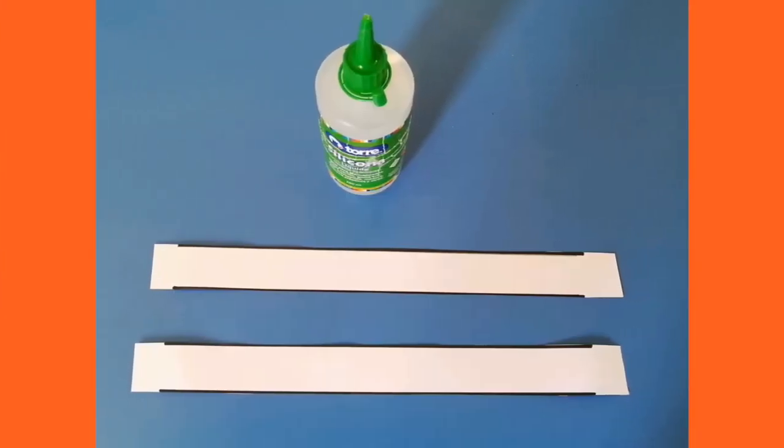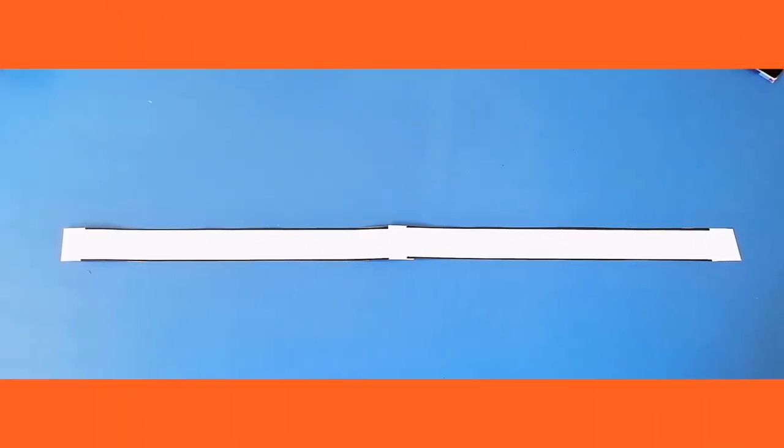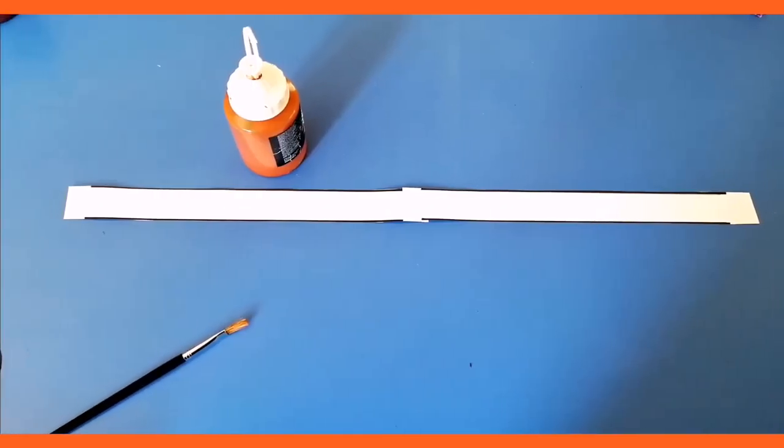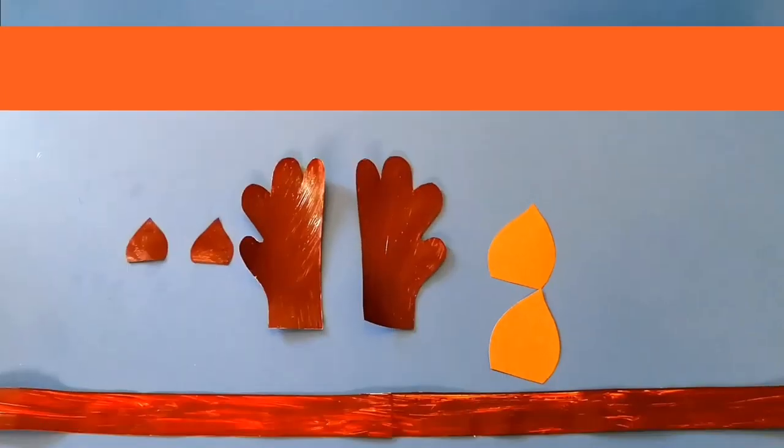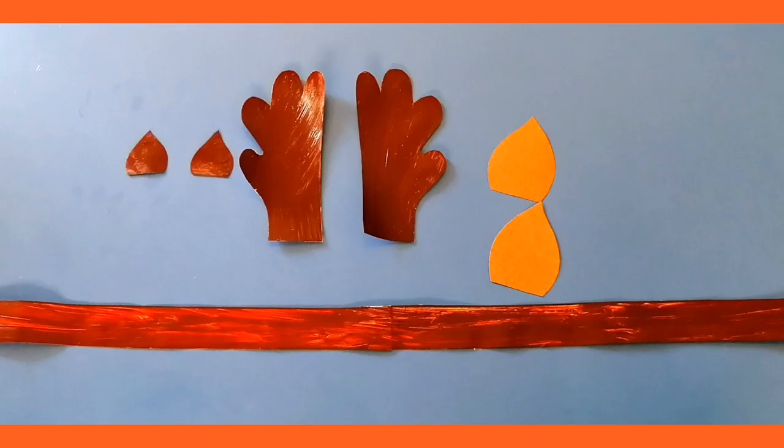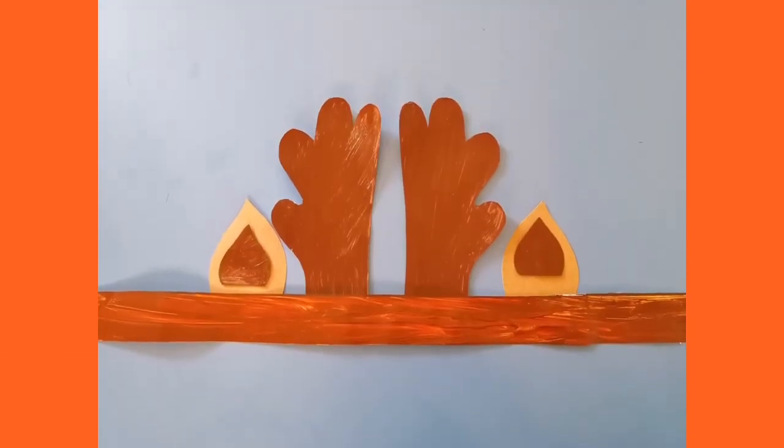Step number three is to paste the two paper lines using glue. Once we finish this step we are ready to keep painting, and when we have all the parts of the reindeer's headband done we can paste them all together.